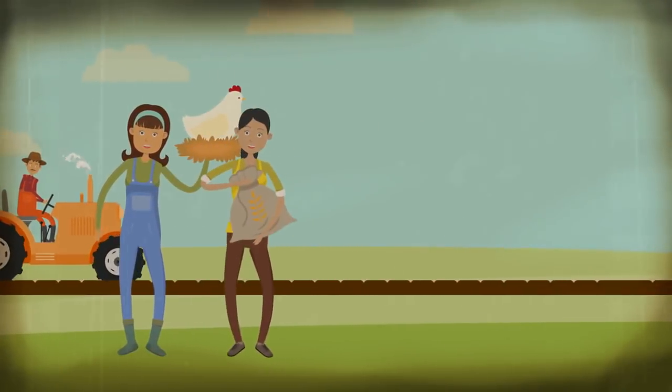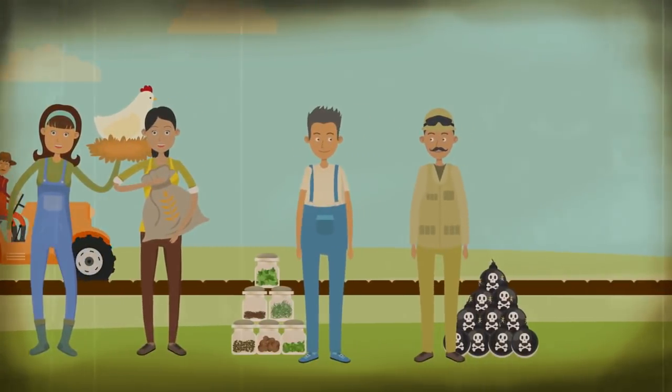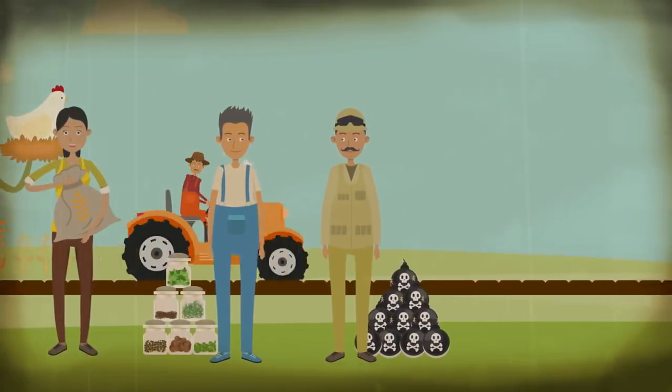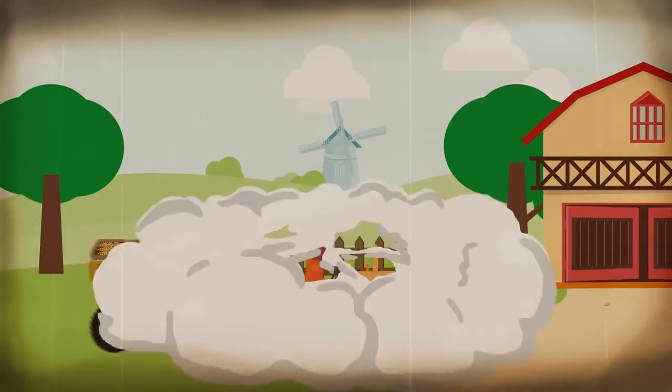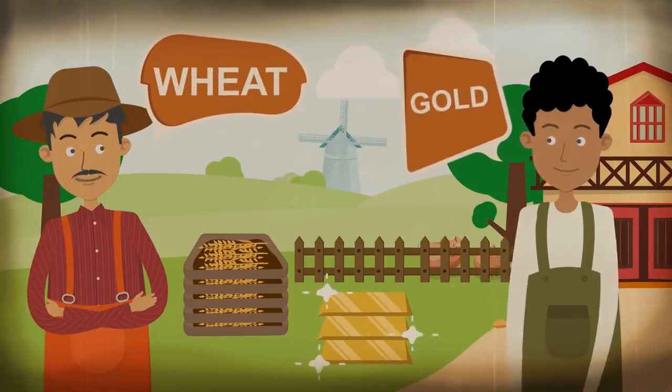Goods were exchanged for things like food, weapons, tea and spices among other things. For example, if a farmer went to a goldsmith, he would exchange some of his wheat for gold.